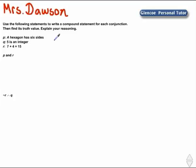P: A hexagon has six sides. Q: Five is an integer. R: Seven plus four equals fifteen. P and R, not R and Q. Also read as the conjunction of not R and Q.